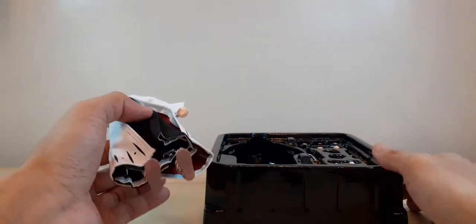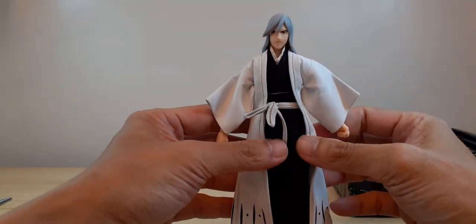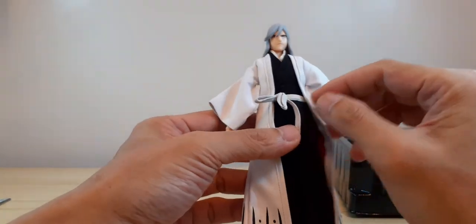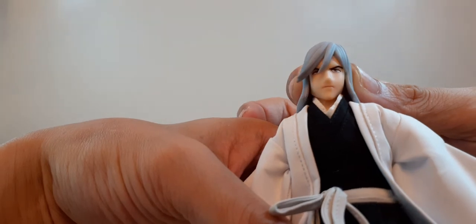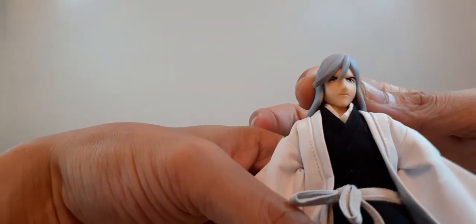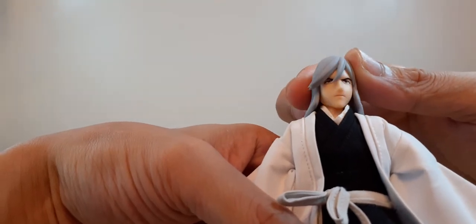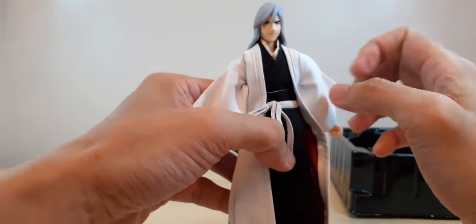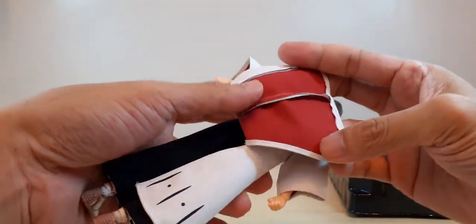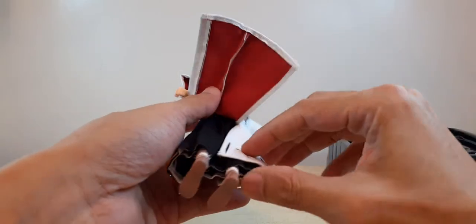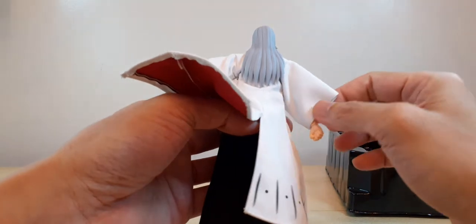So here is our Jushiro figure. He looks nice, really captures the face. Looks like he leapt out of the anime. Even the soft goods on this one with a red trim at the back, it's very, very nice.